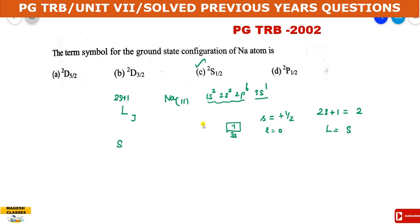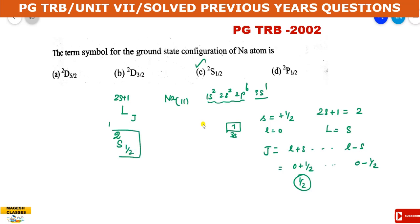Spin multiplicity is 2. J = L + S to |L − S|. Since L = 0 and S = 1/2, J = 0 + 1/2 = 1/2. Therefore the term symbol for sodium is ²S₁/₂. The answer is C.